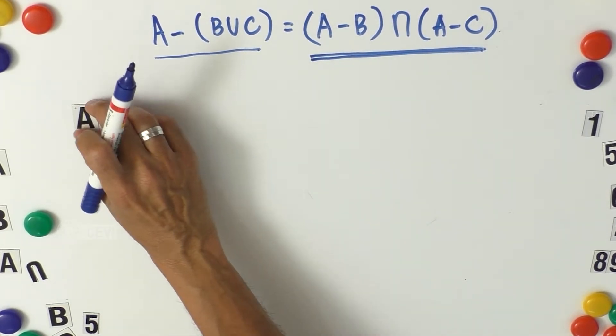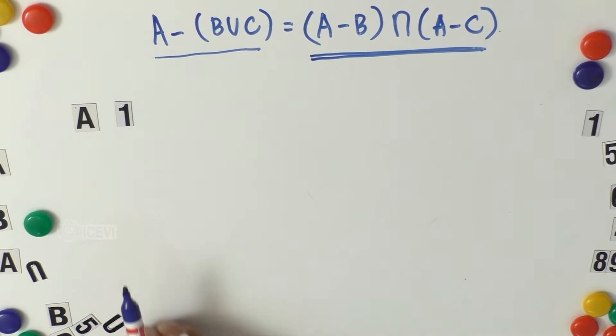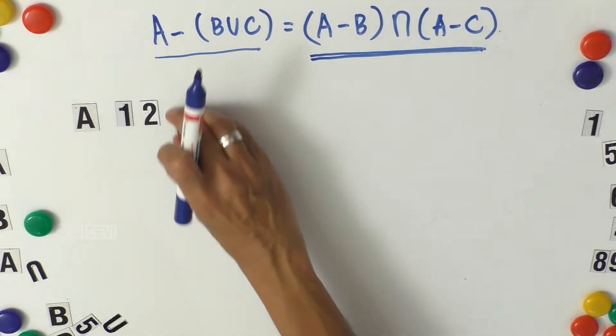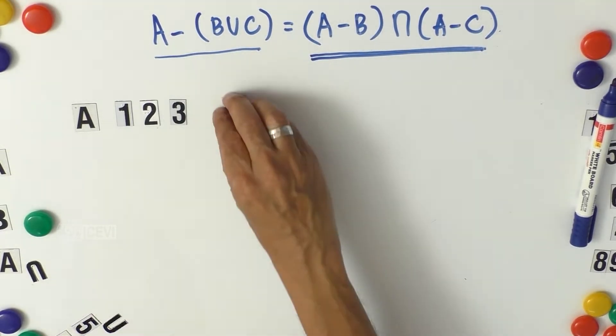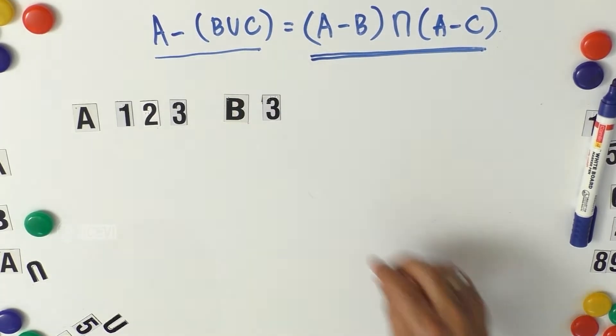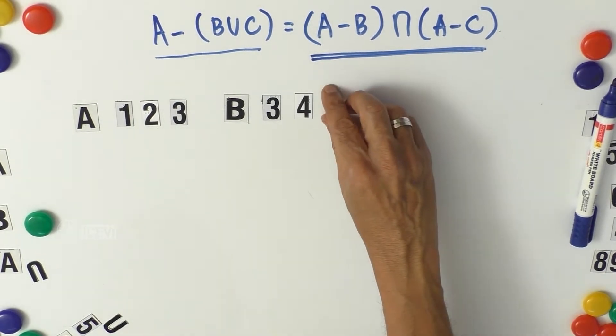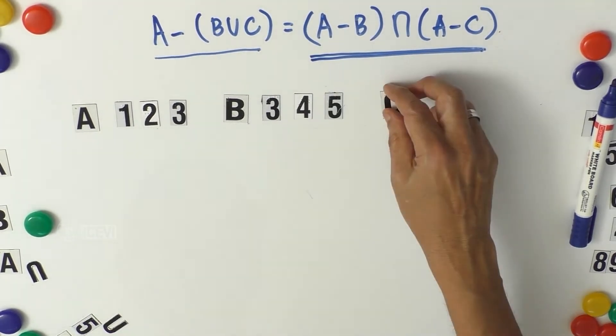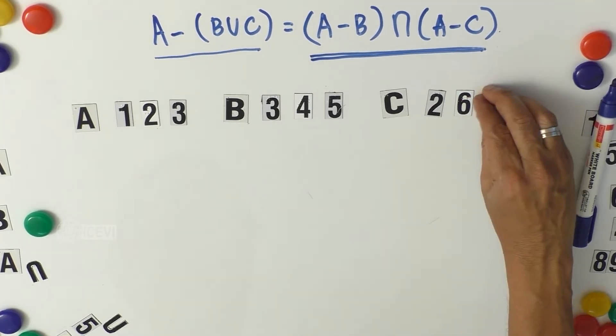Let the set A contain 1, 2, and 3. Set B as 3, 4, and 5. Set C contains 2, 6, and 7.